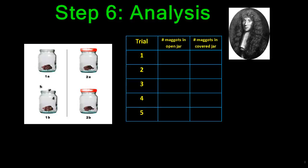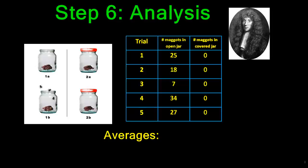Quantitative data is oftentimes represented in a table. Maybe Redi's table might have looked like this. He might have had 5 jars that were open and 5 jars that had a cover to keep the flies out. He would count the number of maggots in the open jar and count the number of maggots in the covered jar and record his data. This is some sample data that Redi might have found during his experiment. As you can see, there are a number of maggots in each of the experimental groups and 0 maggots in the control group which was the jar with the cover. Redi might have conducted averages for each group. The average number of maggots in the open jar in this case was 22, whereas the average number of maggots in the covered jar was 0.